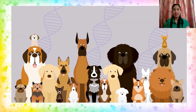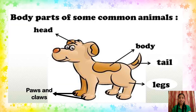Dogs are man's best friend. We learn so many things from a dog's behavior, personality, and most importantly their willingness to provide family members with unconditional love, loyalty, and companionship. All dogs have the same body parts — they have their body, tail, legs, head, paws, and claws — but they differ in appearance, body size, color, length, and texture of fur and hair.